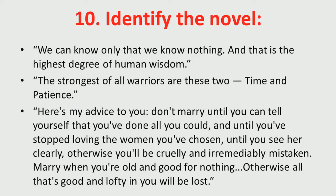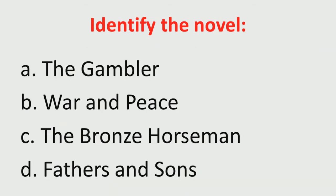Next: identify the novel from these quotations — 'We can only know that we know nothing, and that is the highest degree of human wisdom.' 'The strongest of warriors are these two: time and patience.' 'Here is my advice to you: do not marry until you can tell yourself that you have done all you could, and until you have stopped loving the woman you have chosen, until you see her clearly — otherwise you will be cruelly and irremediably mistaken. Marry when you are old and good for nothing.' Choices: A) The Gambler, B) War and Peace, C) The Bronze Horseman, D) Fathers and Sons.